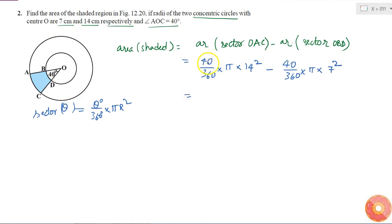40 by 360, I know 40 into 9 is 360, so this is 1 by 9. Similarly, this will also be 1 by 9. So this is 1 by 9 into pi is 22 by 7 into 14 into 14 minus 1 by 9 into 22 by 7 into 7.